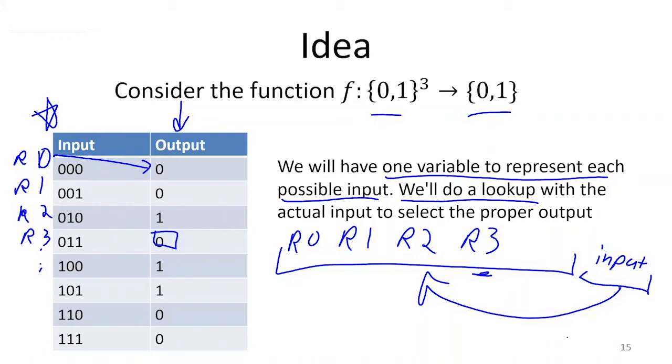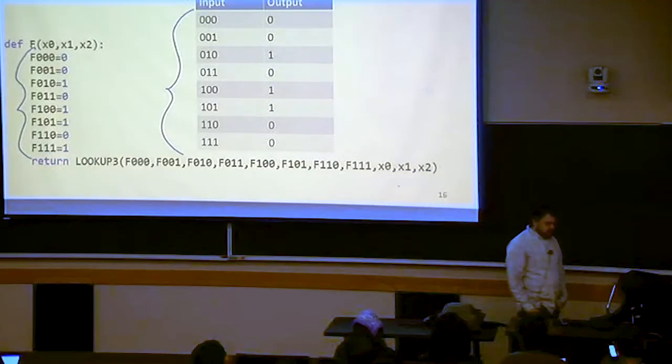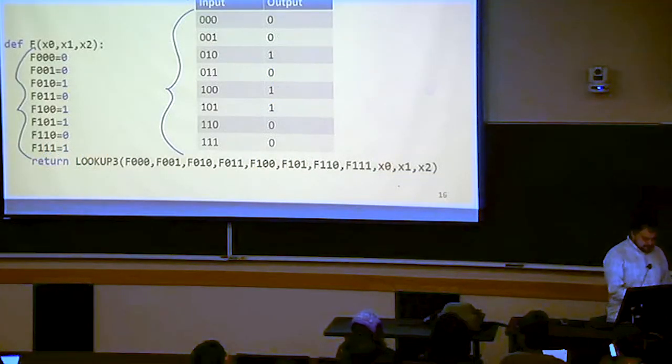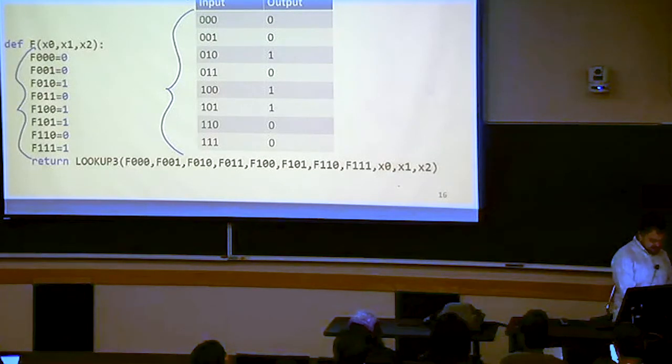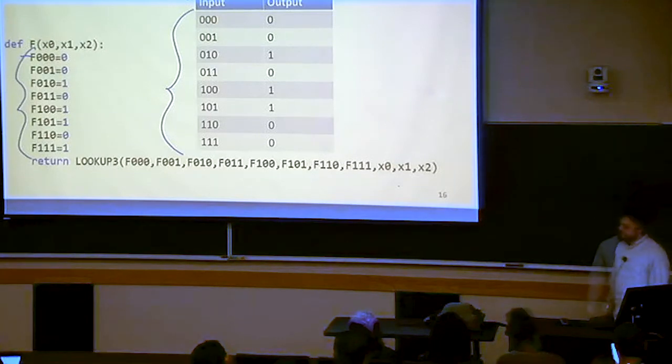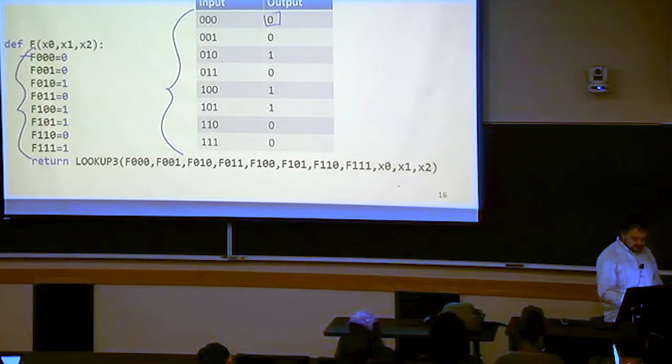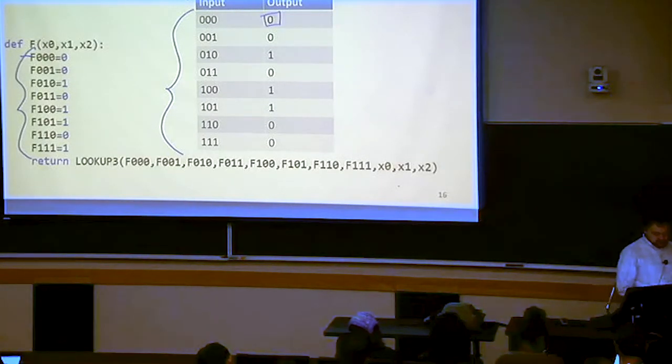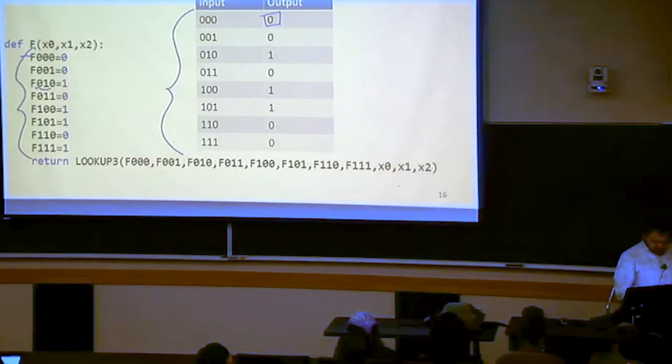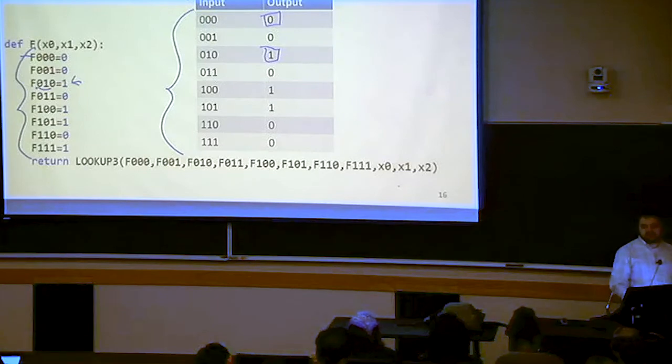In this case, here is that same table again. What we're going to do is here are my variables, one for each row in the table. Right now, this is not quite valid straight line. There is one issue with this, but bearing with me for a moment, the idea is going to be that, say, the variable where we execute the function on the input 0, 0, 0, the value that we're going to assign to that variable is going to be 0, because that's what we said the output should be for that input. When the input was 0, 1, 0, our table told us the output should be 1, so that's the value that we gave to that variable.